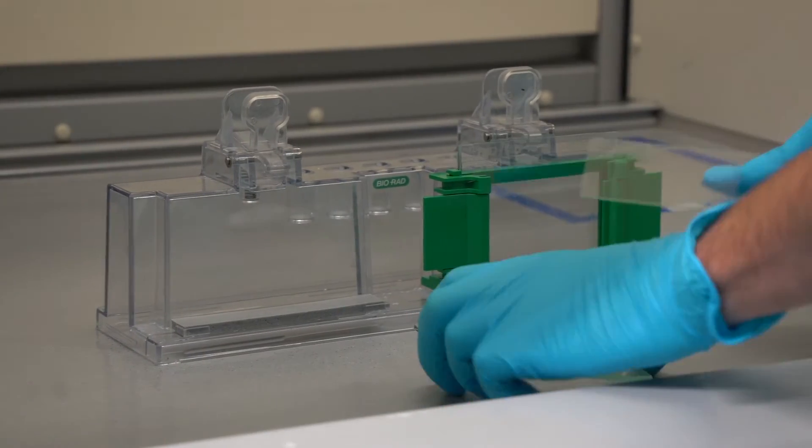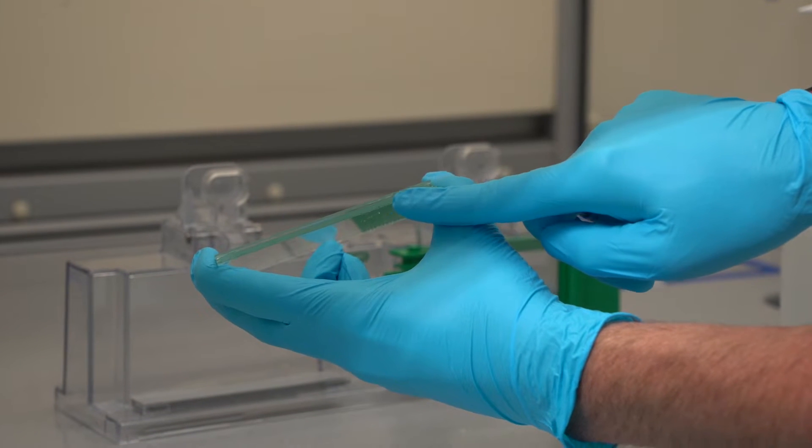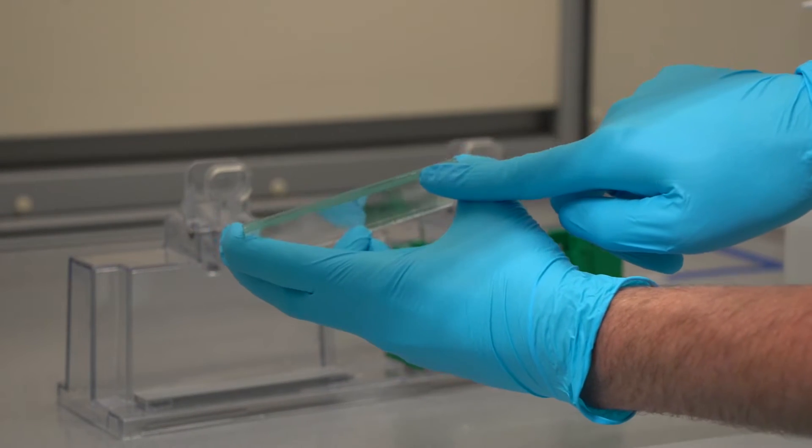Place the clean short plate on the spacers of the clean spacer plate so there is an opening between the two glass slides. This is where the gel will be poured.